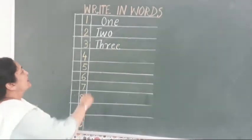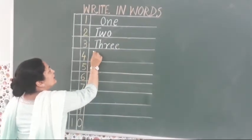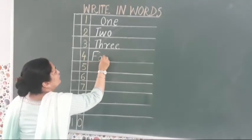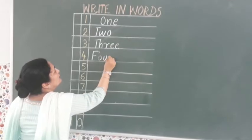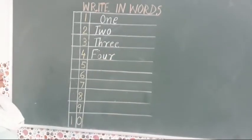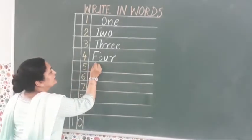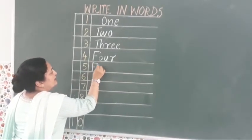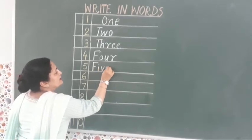Spelling of four: F-O-U-R, four. Five: F-I-V-E, five.